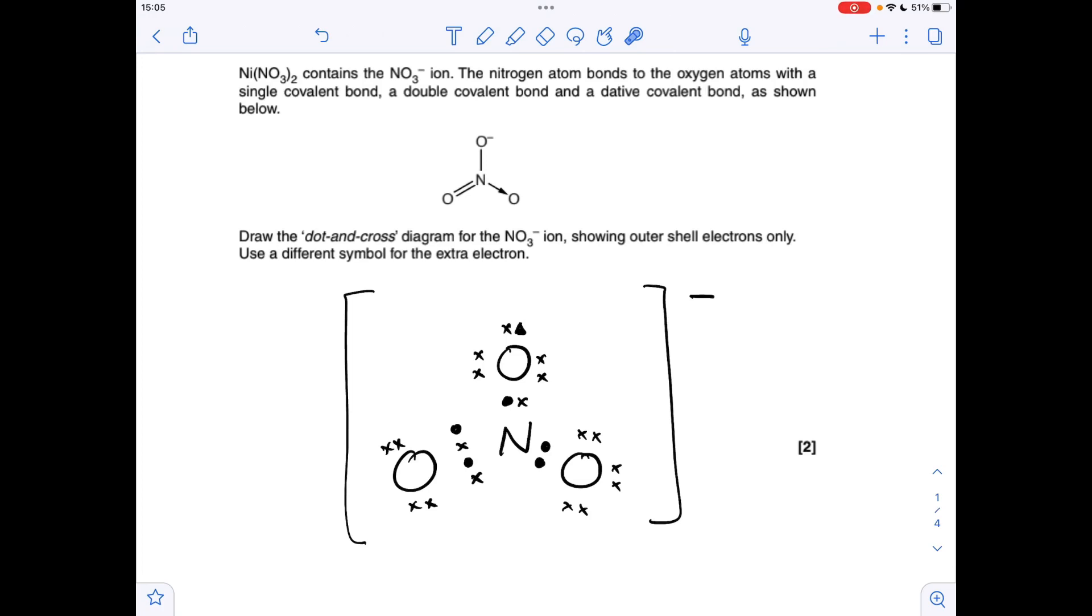So this dot and cross diagram. If we start with the double bond here, that means the nitrogen and the oxygen need to put two electrons in each. You'll notice I've gone for crosses for the oxygens and these dark circles for the nitrogen. So a double bond here, and then if we go up here, that's a regular single covalent bond, so I need one electron from each in the shared pair.